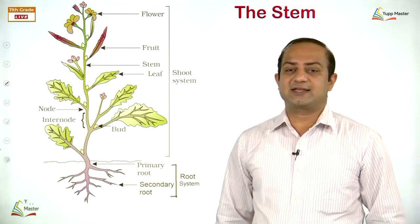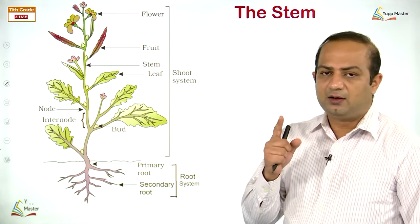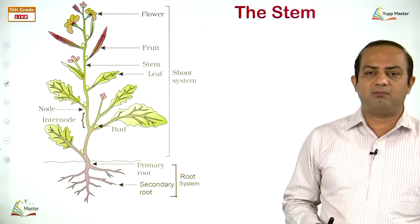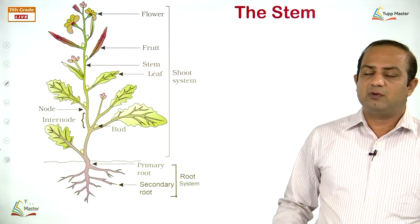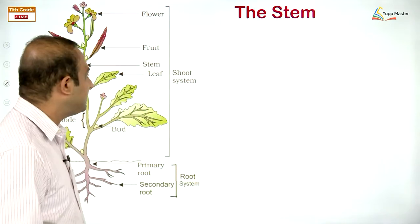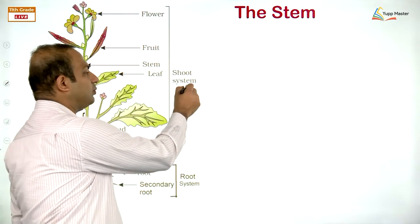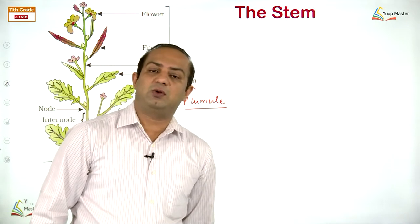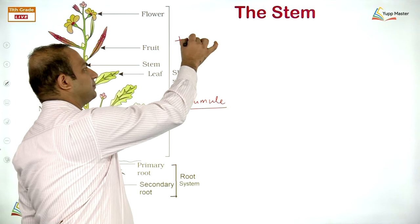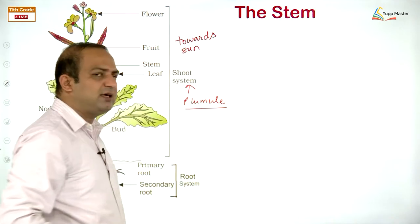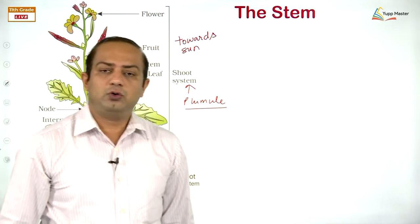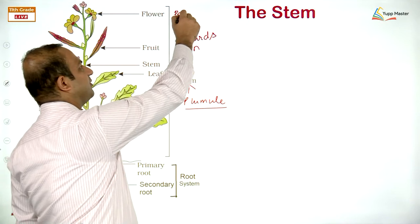Be connected with us and watch classes continuously and appear in the daily test. The stem is the topic we are about to start. The shoot system comes from the plumule. The plumule is the part of the embryonic axis that grows towards the sun — it is positively phototropic, whereas root is positively geotropic.